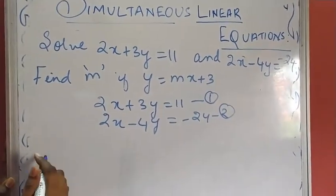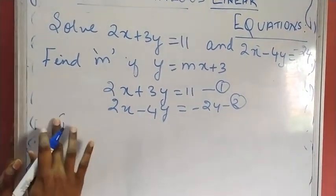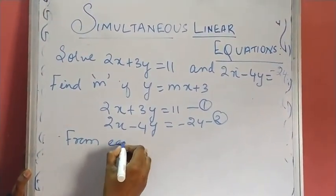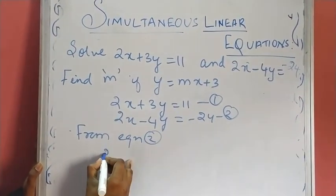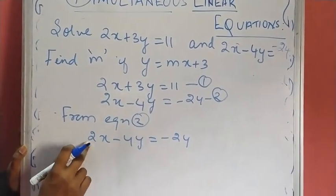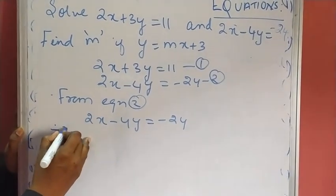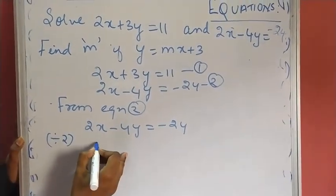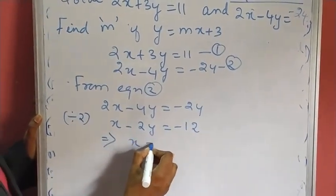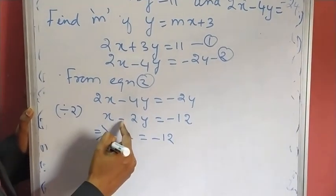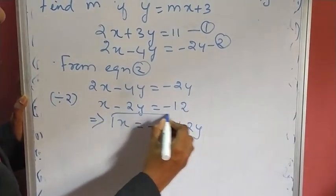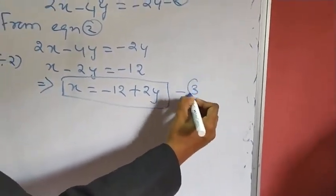Since we are doing the substitution method, let us take equation 2: 2X minus 4Y equals minus 24. Because there are common factors, we can divide the whole equation by 2, giving X minus 2Y equals minus 12. Therefore X equals minus 12 plus 2Y when we bring minus 2Y to the right-hand side, and we call this equation 3.